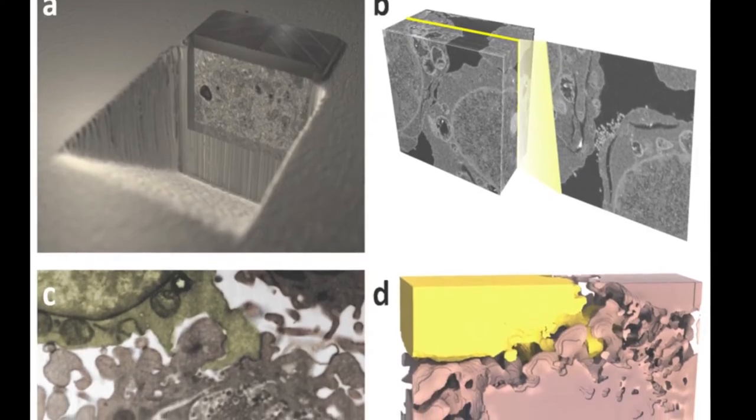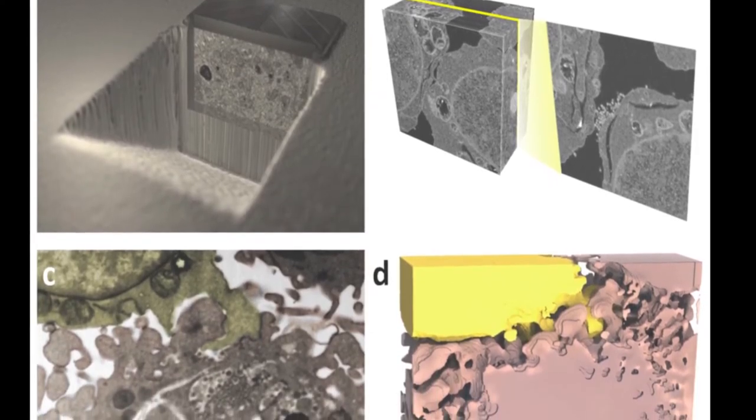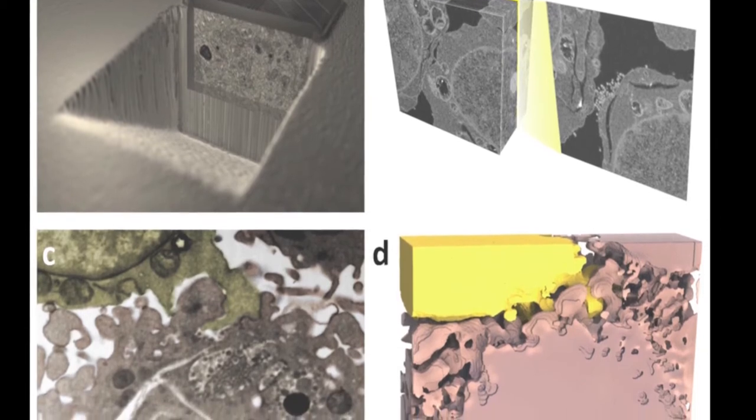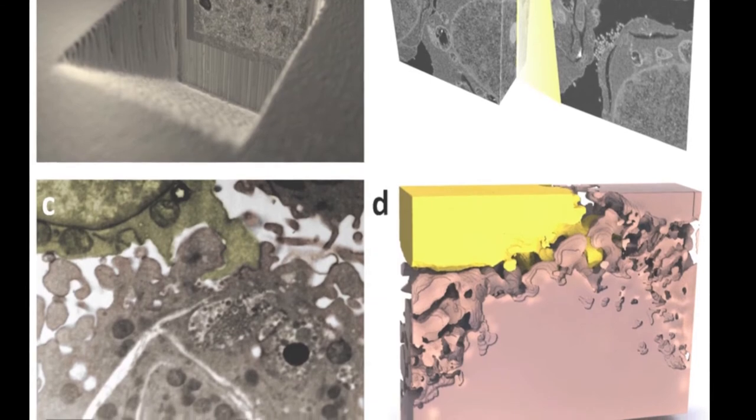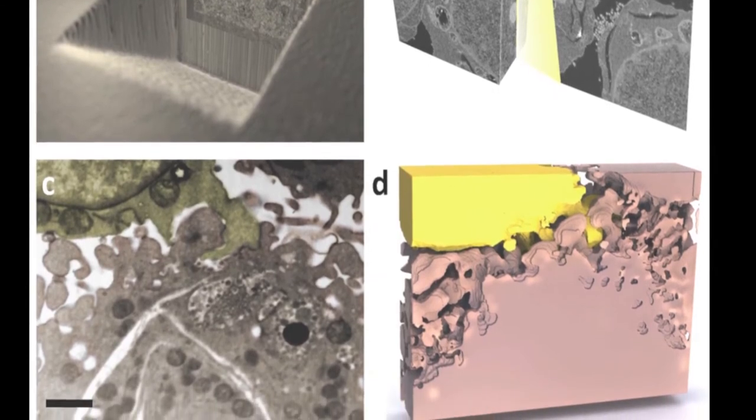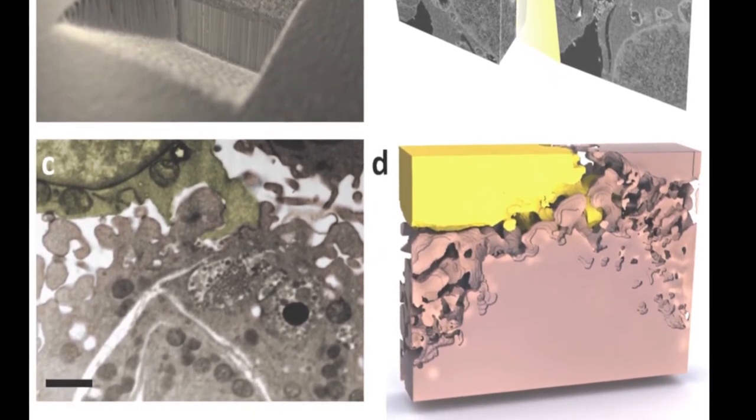Another 3D imaging technique used to visualize viral infection is FIB-SEM. Cells are embedded in resin and abraded nanometers at a time using a gallium ion beam, slicing through the cell.